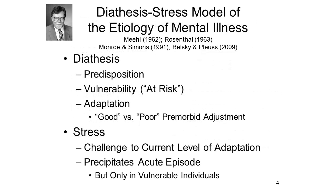The somatogenic and psychogenic theories of mental illness are first and foremost theories about the role of nature and nurture. And what we've now learned is that the proper formulation of this question is not which is right, but rather how do nature and nurture interact? The etiology of mental illness is no exception to this rule. In fact, the dominant framework for thinking about the origins of psychopathology is what's known as the diathesis stress model of psychopathology.